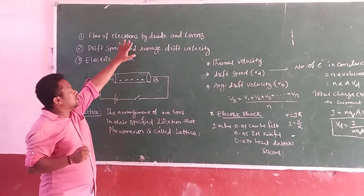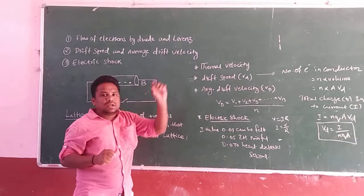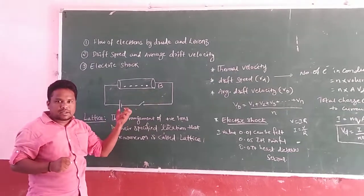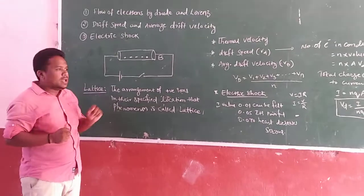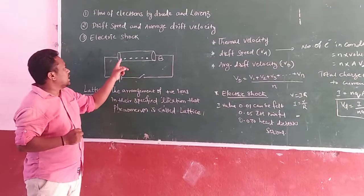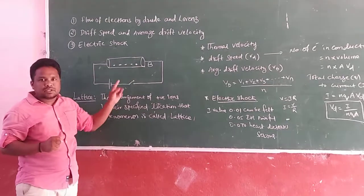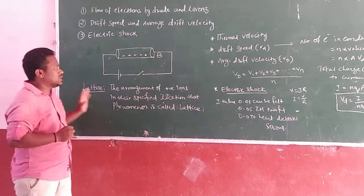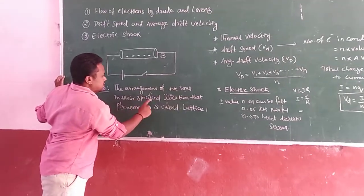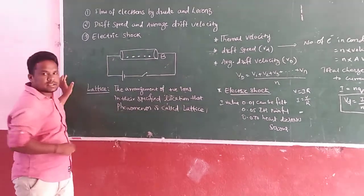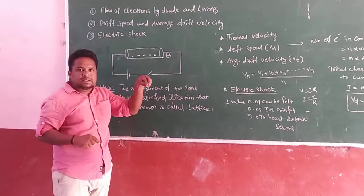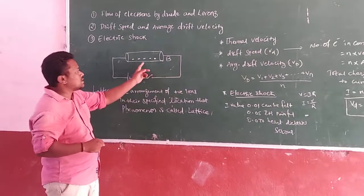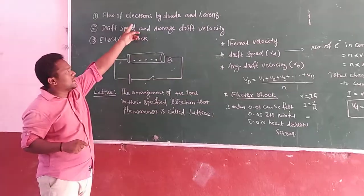Before we discuss that, in the 19th century, Drude and Lorentz proposed this. Take any conductor — a conductor is nothing but something which allows the flow of electrons. Suppose this is a copper conductor. Inside the conductor, these are positive ions. Positive ions are fixed in their locations. That phenomenon is called the lattice. Inside the conductor, the arrangement of positive ions in their specified locations is called the lattice. The positive ions are fixed at their places, which is why only electrons are able to move — protons cannot move. This was proposed by Drude, Lorentz, and other scientists.